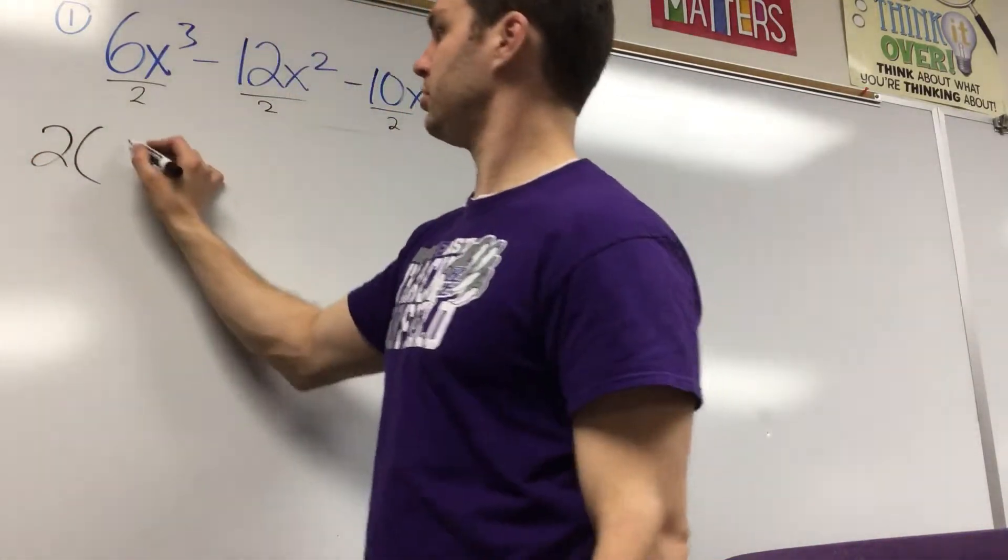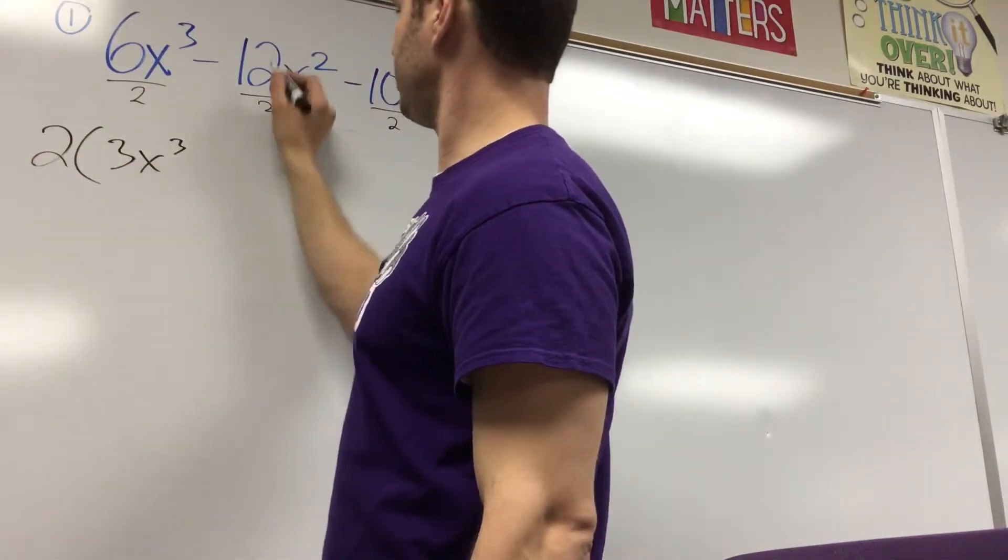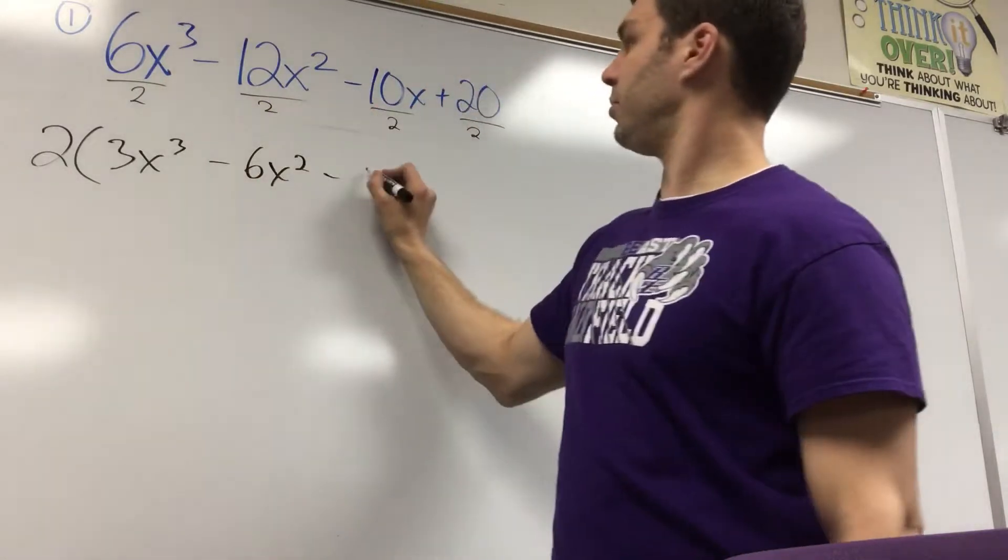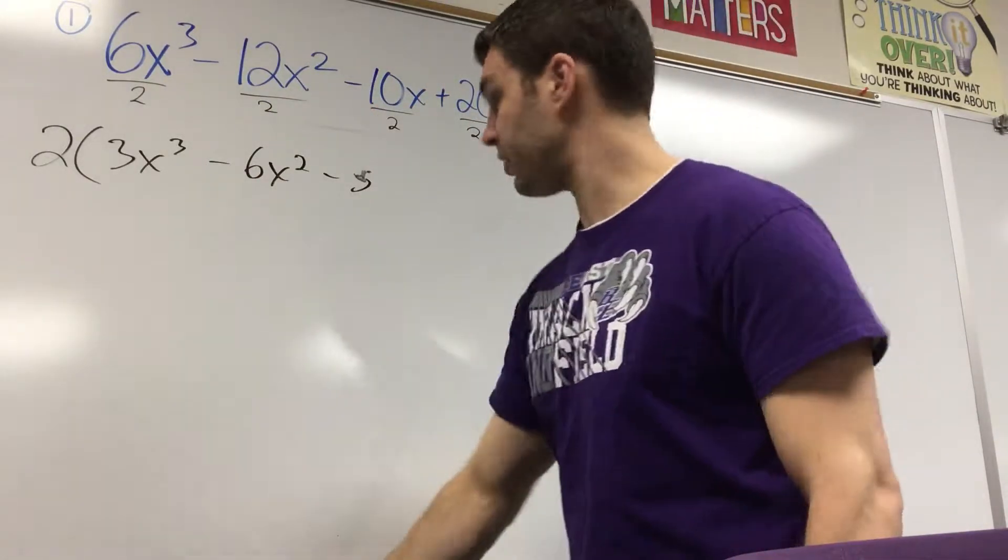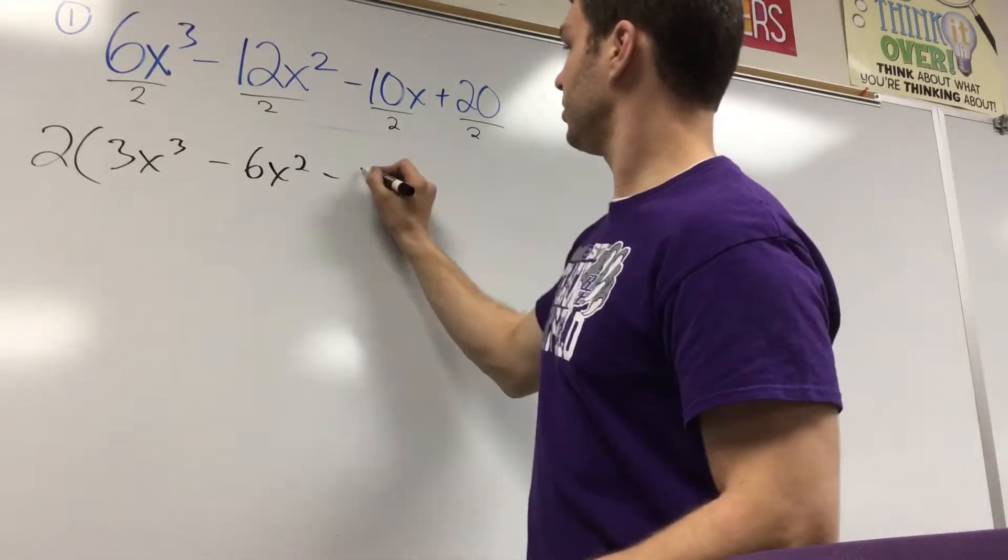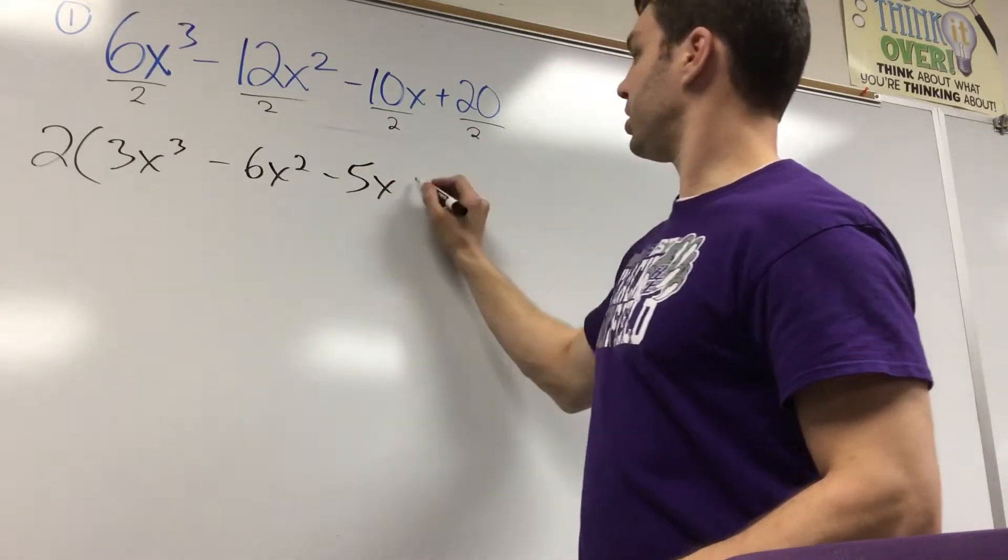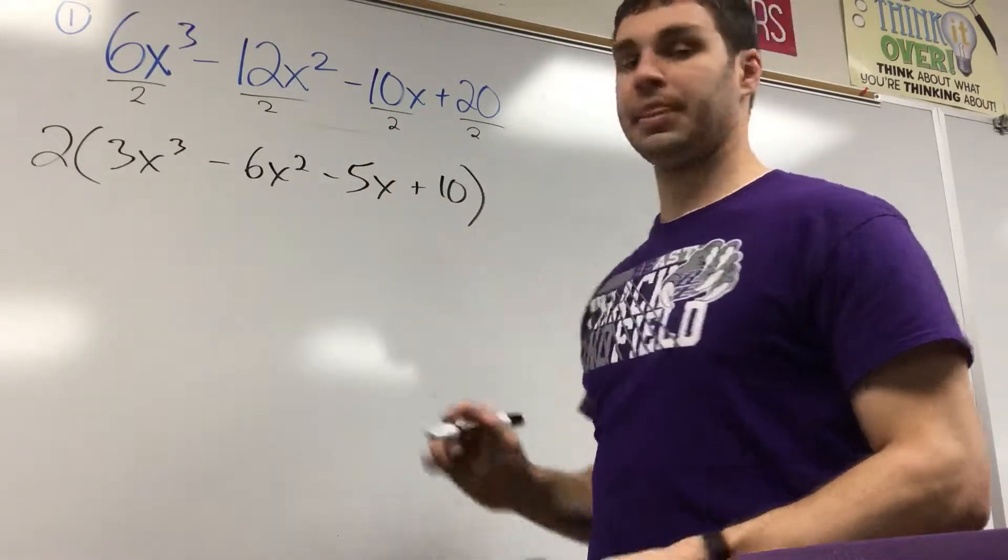Now let's write what's left over: 3x to the third minus 6x squared minus 5x plus 10.